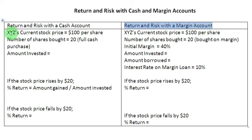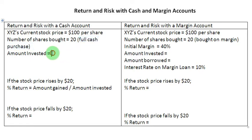Let's assume a company XYZ Corporation, the current stock price for which is $100 per share, and the investor wishes to buy 20 shares in this company by making a full cash purchase. Since 20 shares are sought to be purchased and each share is priced at $100, the amount of money invested is going to be $2,000.